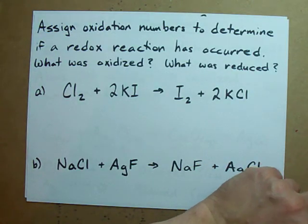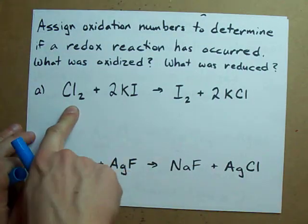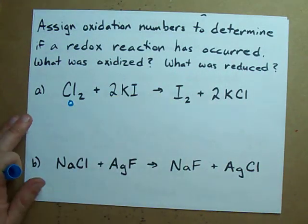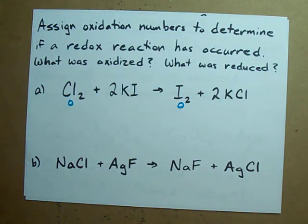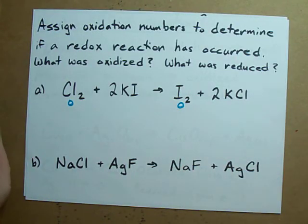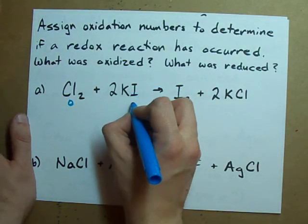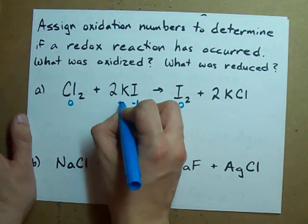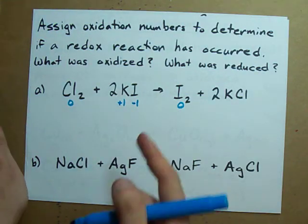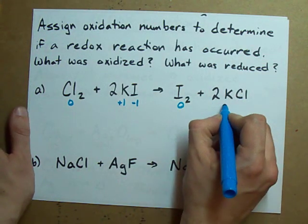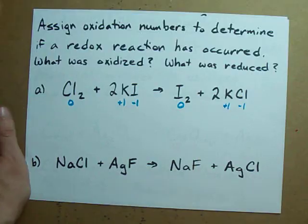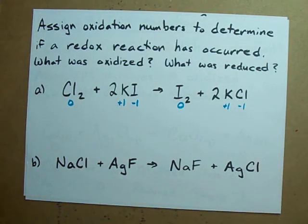Check out how fast this can go. That's an element, oxidation number zero. That's an element, oxidation number zero. No hydrogens, no oxygens — just assign the rest. Iodine likes to charge minus one and potassium likes plus one — look it up, those are the valences. Potassium likes plus one, chlorine likes minus one — also the valences.